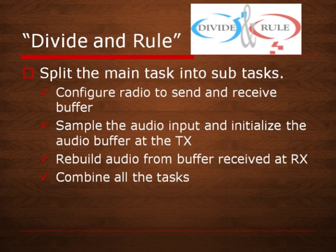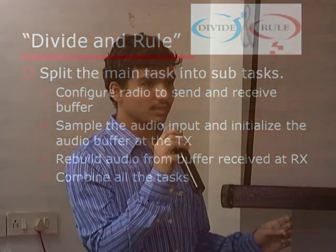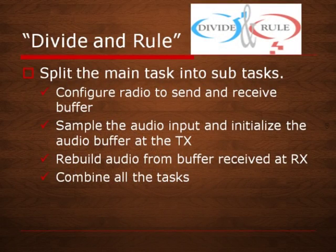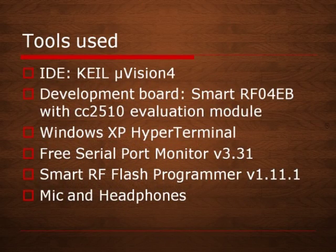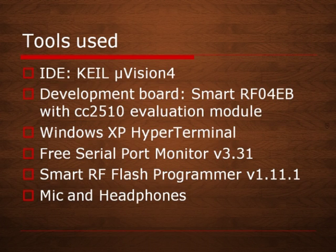This includes configuring the radio to send and receive the buffer, sampling the audio input from the mic, initializing the audio buffer at the transmitter end, and rebuilding the audio at the receiver side from the buffer received at RX. The tools used are IDE Keil version 4, development board SmartRF 04EB with CC2510 evaluation module, Windows XP HyperTerminal, Free Serial Port Monitor version 3.31, SmartRF Flash Programmer version 1.1.1.1, mic for transmitting and headphones for listening.